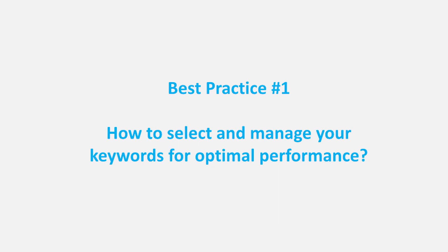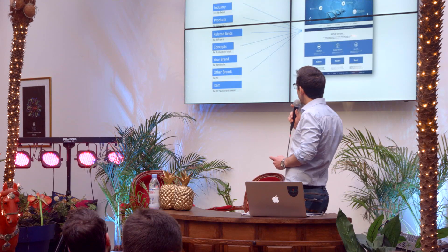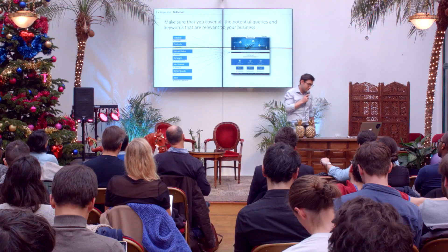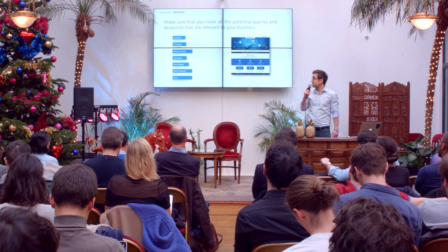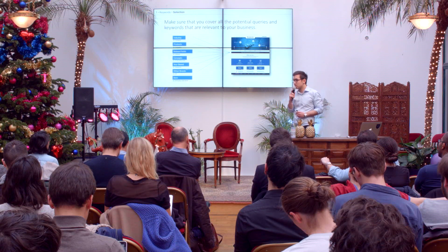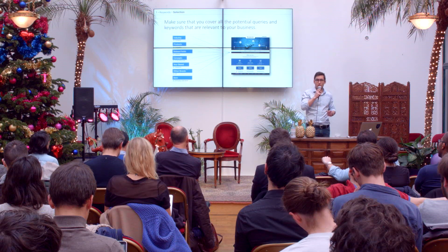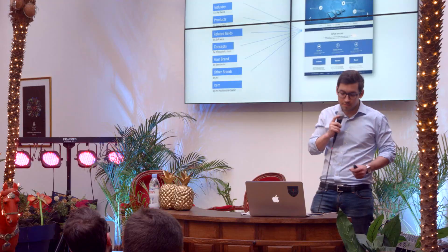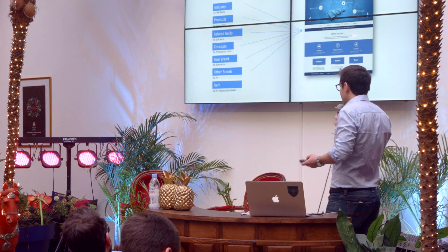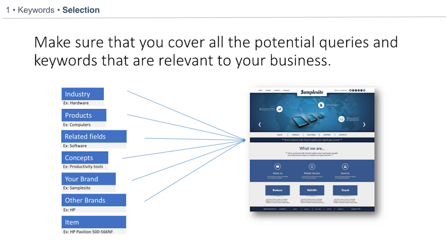Best practice number one: keywords. Keywords are really the way customers find your business on search engines. When you think on a macro level about your AdWords account, you really want to have all different types of keywords — because not all keywords have the same conversion behavior. For example, in most accounts you have brand keywords, keywords related to your brand.